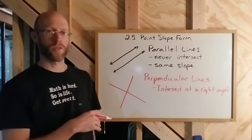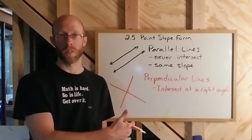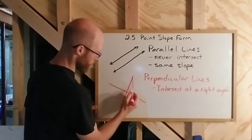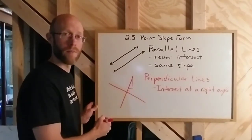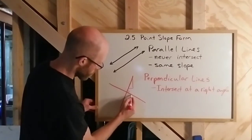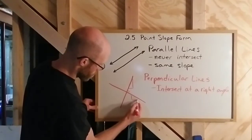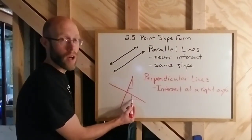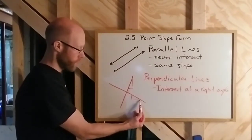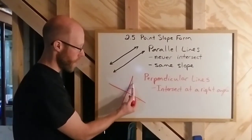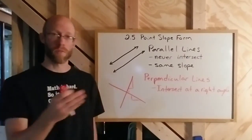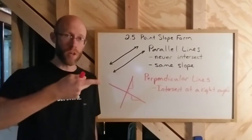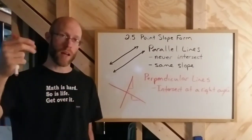There's an interesting relationship between the slopes of perpendicular lines. There's a lot of geometry involved in proving this, so I'm not going to go into the details. But if you were to draw a right triangle using a vertical and horizontal line, what you would find is that the rise for one line is the same as the run for the other, and the run for the first is the same as the rise for the other.